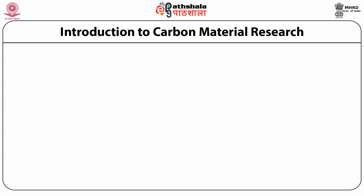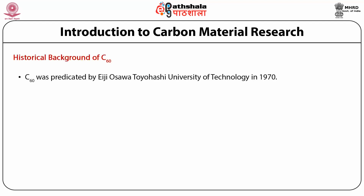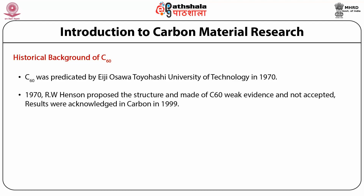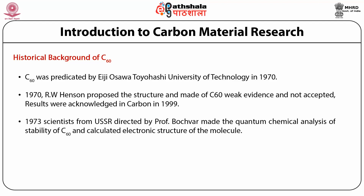Carbon nanomaterials caught attention by the discovery of C60. C60 is known as fullerene. This fullerene was predicted by E.G. Osawa of Toyohashi University of Technology in 1970. However, it was also proposed by R.W. Hanson — the structure of C60 — but it was not accepted and the result was acknowledged in Carbon journal in 1999. Then in 1973, scientists from USSR, led by Professor Bochauer, made the quantum chemical analysis of the stability of C60 and calculated the electronic structure for this molecule.